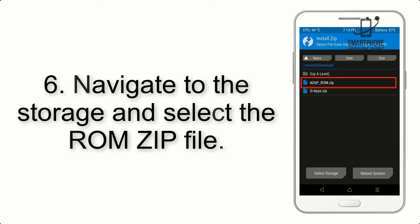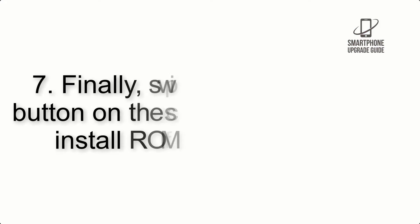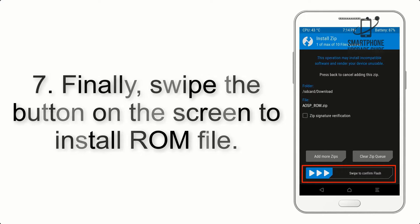Step 6. Navigate to the Storage and select the ROM ZIP file. Step 7. Finally, swipe the button on the screen to install the ROM file.